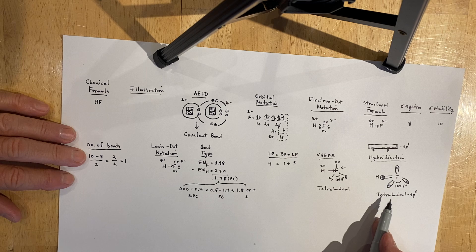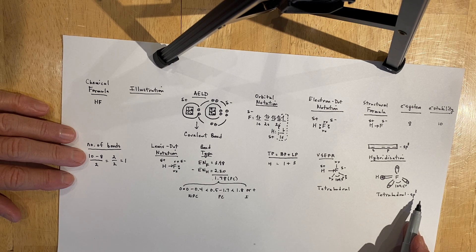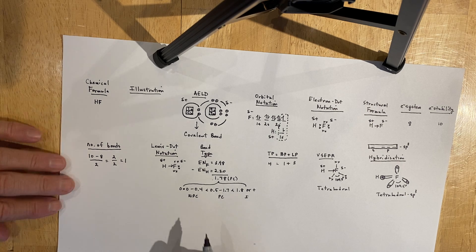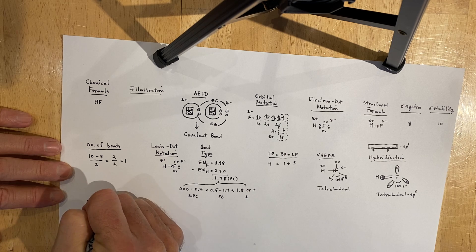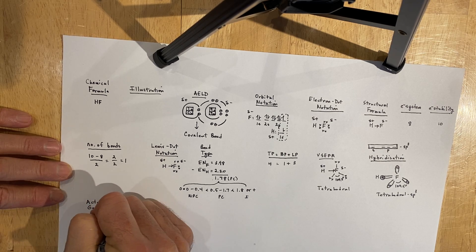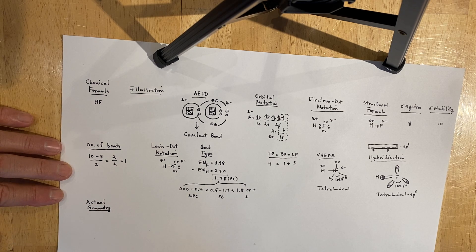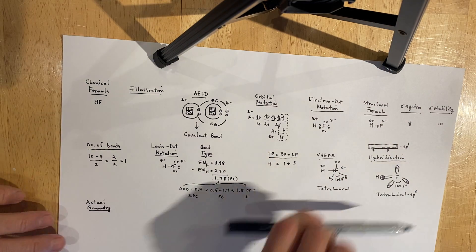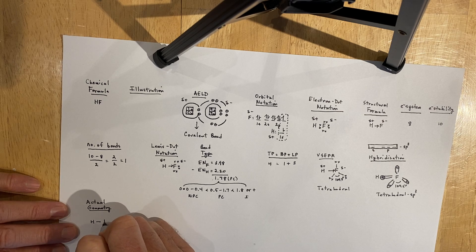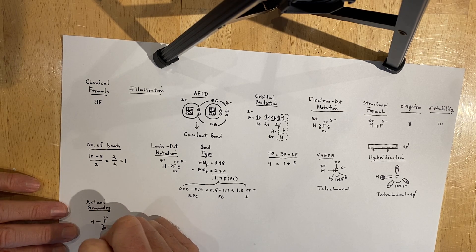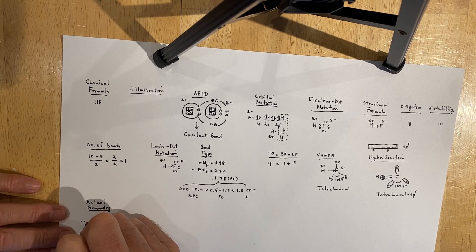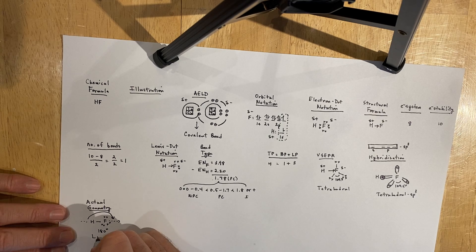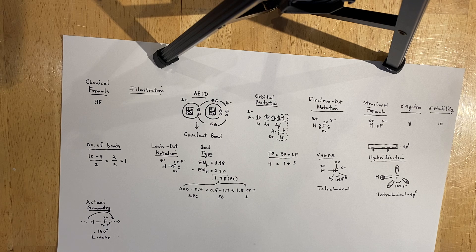Four total pairs predicts a tetrahedral arrangement and sp3 hybridization — but those are just predictions. When we look at the actual geometry of hydrogen fluoride, we cover up the lone pairs and only look at the bonded pairs. Two atoms create a straight line: the bond angle is 180 degrees, and we say that hydrogen fluoride is a linear molecule.